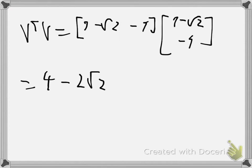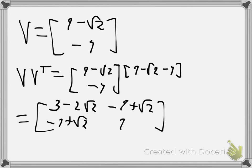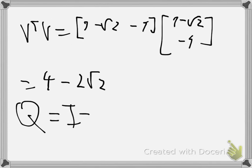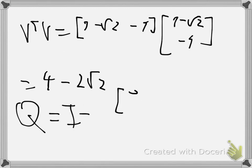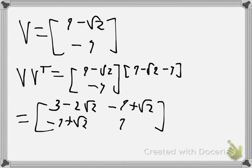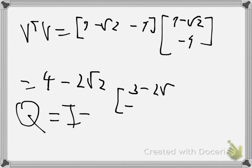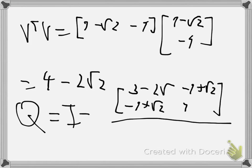Our transformation Q will be the identity matrix minus 2 times V V-transpose, all divided by V-transpose V.